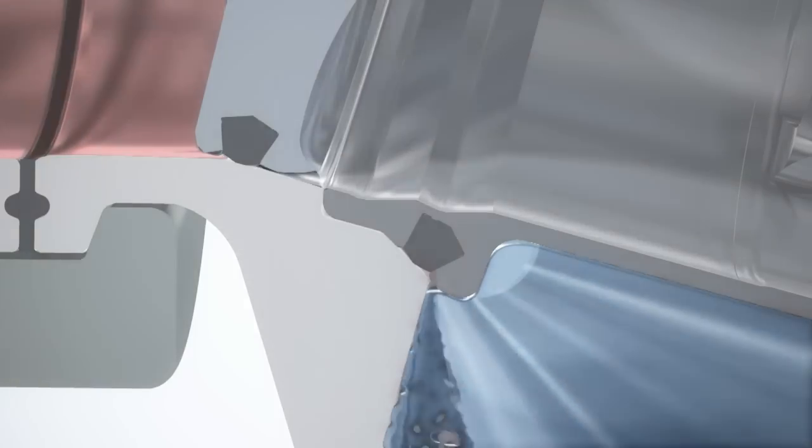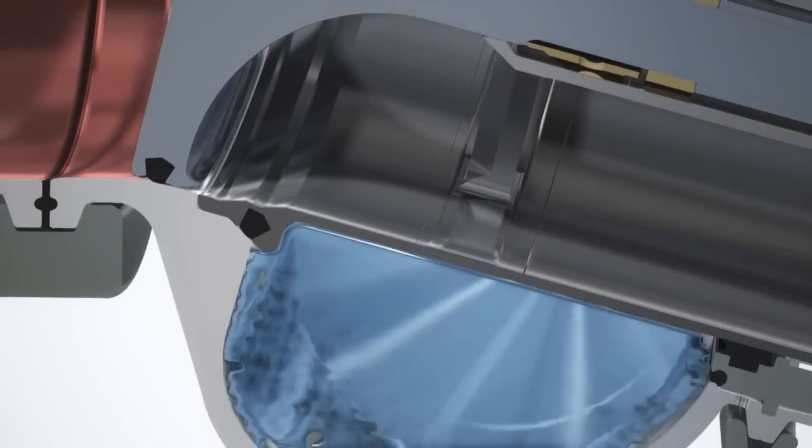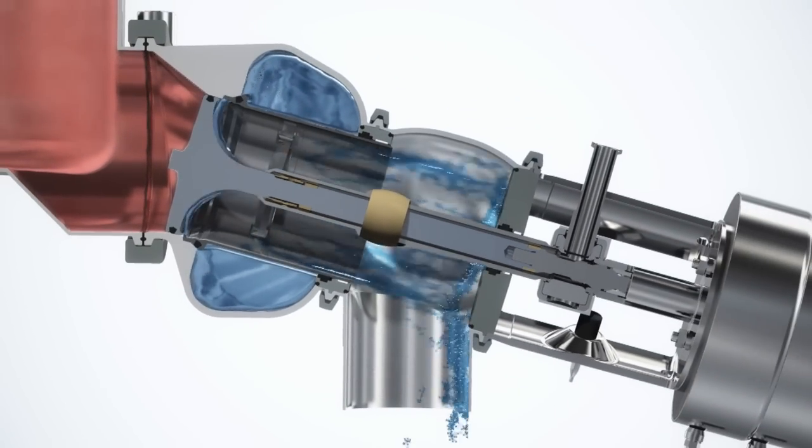The CIP flow pattern between the plugs creates a vacuum at the opposite seal, a phenomenon which is known as the Venturi effect. Seat lifting for CIP of one plug seal can therefore occur without affecting the other. This provides risk-free operation of the CIP sequence.